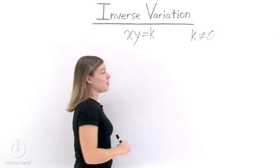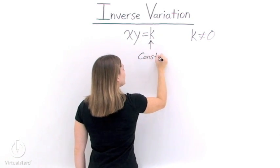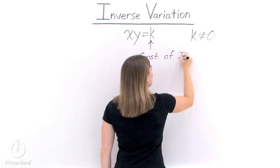Now, in addition to k not equaling 0, k has a special name. k is a constant that's called the constant of inverse variation.